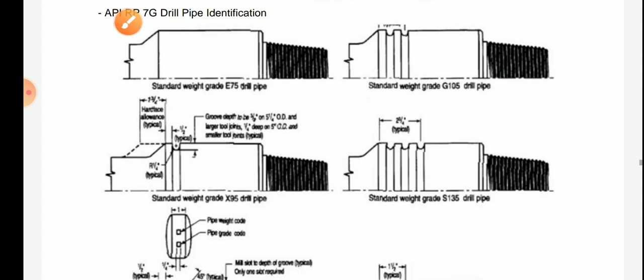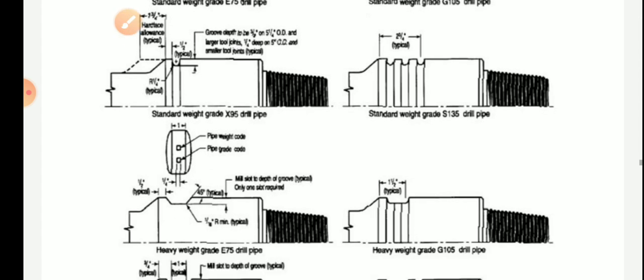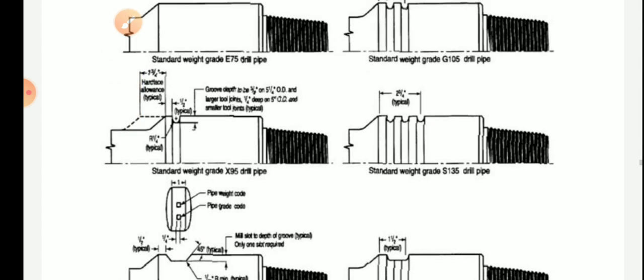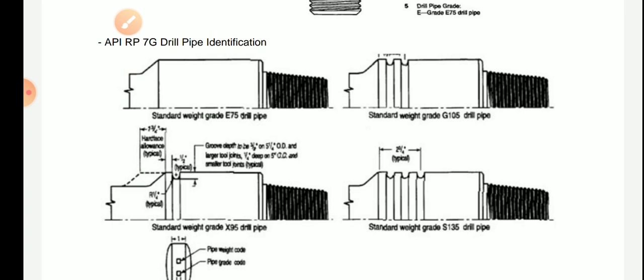I hope you understand what is drill pipe and the identification of drill pipe — pin, joint, body, internal upset, external upset, and combined internal-external upset. If you like my video, please subscribe and share. Thank you.